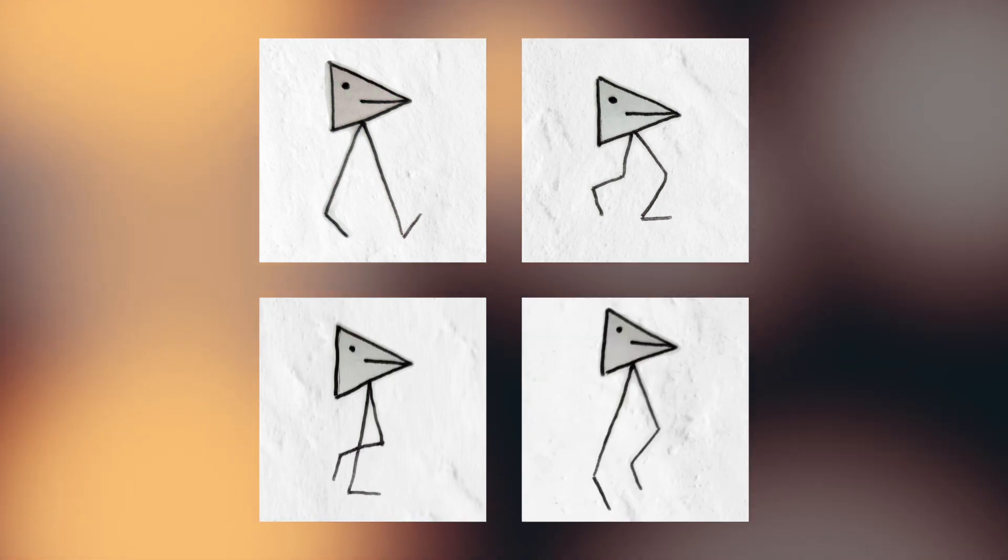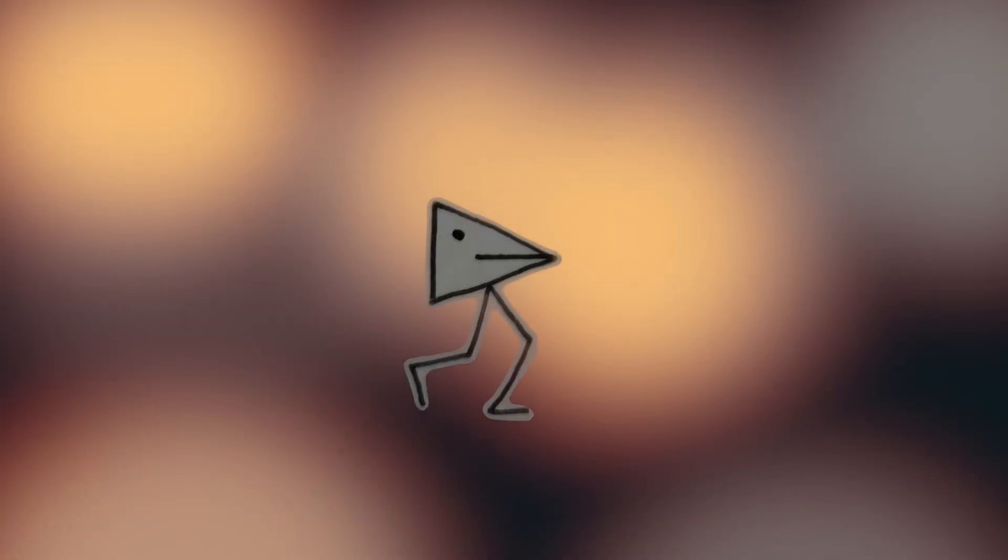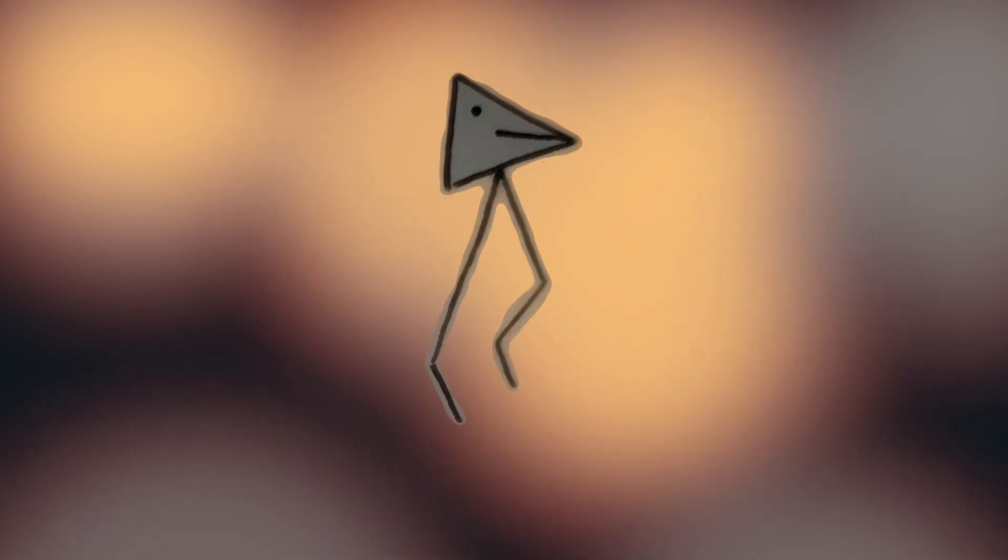An animation is a type of video made up of a lot of pictures. These pictures change very fast. This makes it look like something is moving.